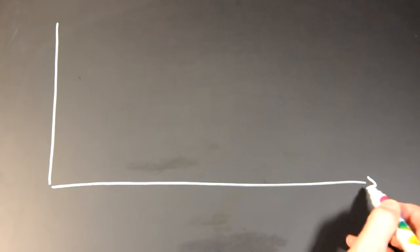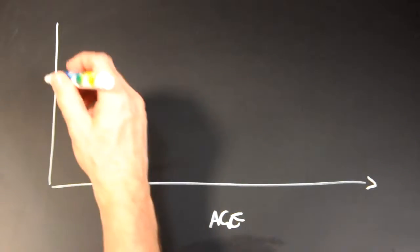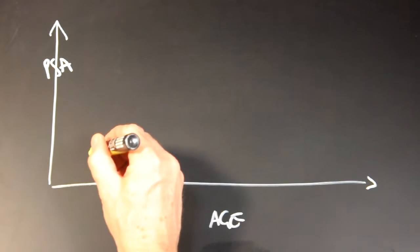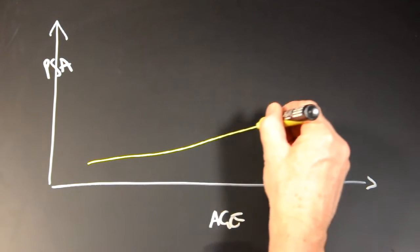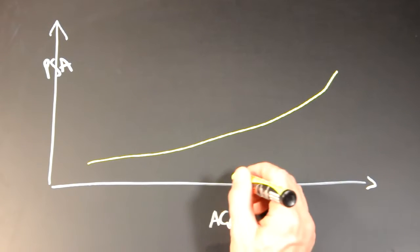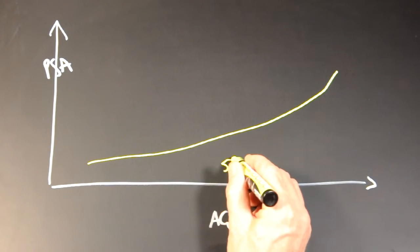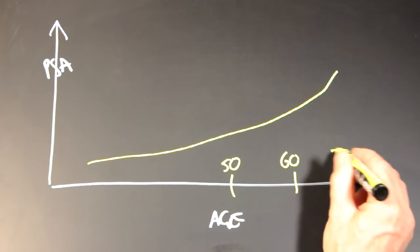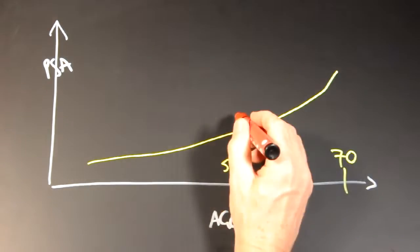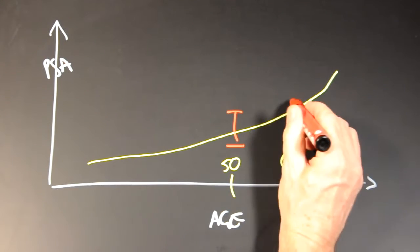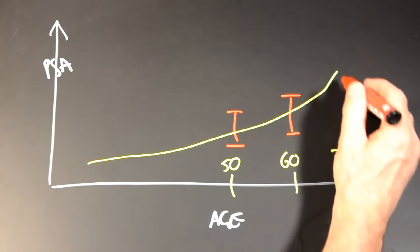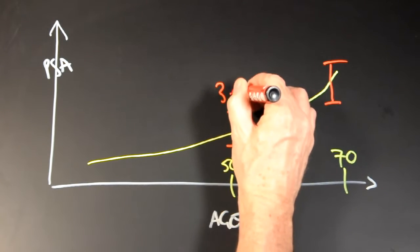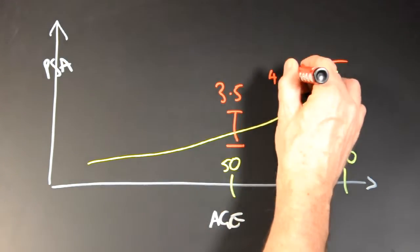As we get older, the PSA value increases gradually, and there are age-related limits for normal PSA. There's a range of measures in the population and, for example, at the age of 50, the top end of normal would be 3.5, 60s, 4.5, and in your 70s, 6.5.